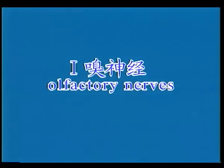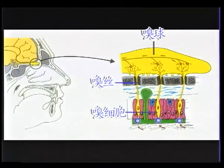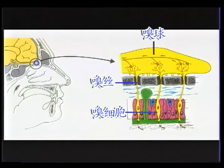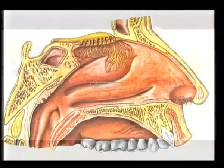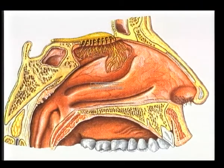一，嗅神经（Olfactory nerves）。嗅神经为特殊内脏感觉纤维，由上鼻甲上部和鼻中隔上部黏膜内的嗅细胞中枢突聚集成二十多条嗅丝，即嗅神经，穿筛孔入颅，进入嗅球，传导嗅觉。